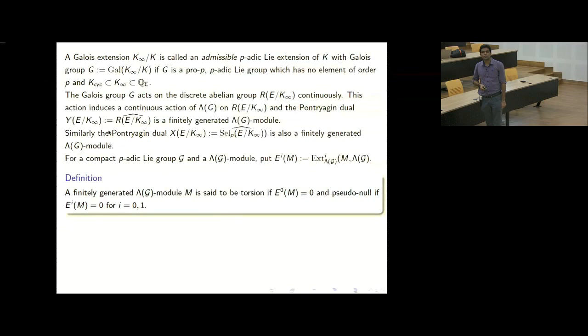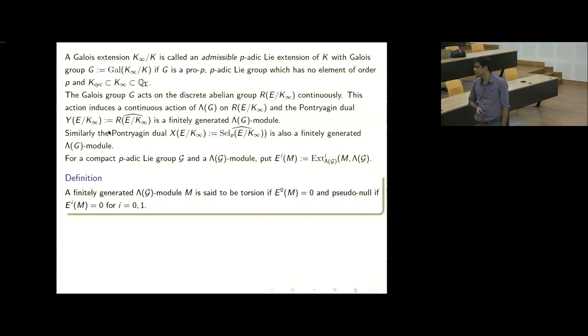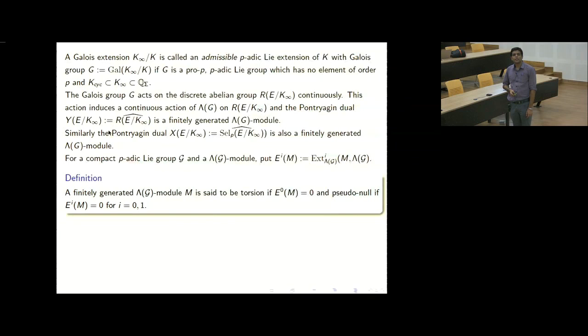Once we have these finitely generated Λ(G) modules, which is a Noetherian ring, we consider the Ext groups. Ext^i_E(M) is the i-th Ext cohomology group of Λ(G), M with coefficients in Λ. Whenever the zeroth Ext group vanishes, we say the module is torsion. When both the zeroth and first Ext groups vanish, we say it is pseudonull. When Λ(G) is a commutative domain, torsion in this sense agrees with the usual definition.